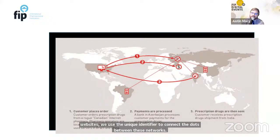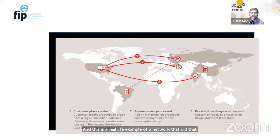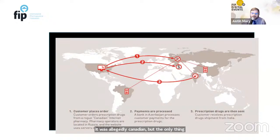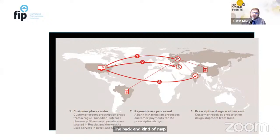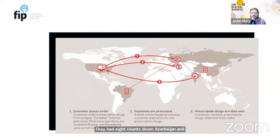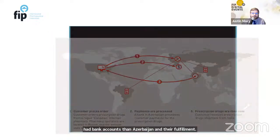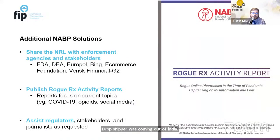A real-life example of a network that did exist: it was targeting U.S. customers, allegedly Canadian but the only Canadian thing about it was a maple leaf on their website. The back-end mastermind was located in Russia, utilizing servers in Brazil and China, with bank accounts in Azerbaijan, and fulfillment dropshipping coming out of India. These are the kinds of complex, cross-border operations we are dealing with.